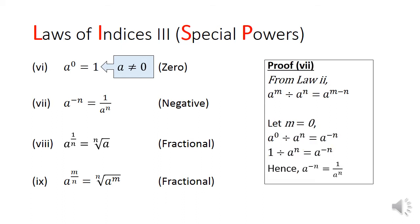Law number 7 deals with negative indices. It states that a to the power of negative n gives us 1 over a to the power of n. The proof is also derived from the second law. In this case, when we set m to be 0, we will get 1 over a to the power of n on the left hand side and a to the power of negative n on the right hand side.